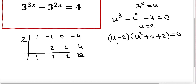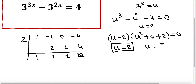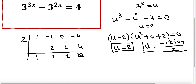So we can see that u equal to 2 is one real solution. Applying the quadratic formula to u squared plus u plus 2 — I'm not going to solve everything because it's straightforward — it yields u equal to negative 1 plus or minus i times the square root of 7, divided by 2. So there are two complex solutions and one real solution.